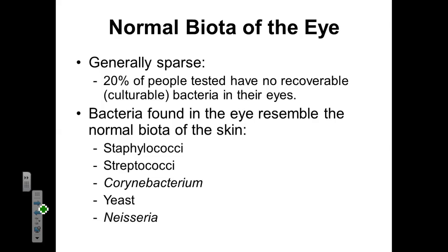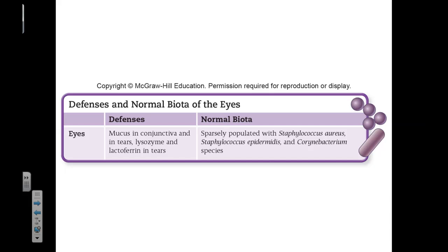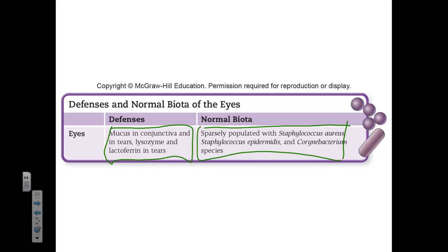Let's move on and talk about the normal biota of the eye. Our eye, generally speaking, doesn't have a lot of microorganisms growing on it. In 20% of people tested in a recent study, approximately no microorganisms were found — no culturable bacteria were found in their eyes. The bacteria that are found on the eye generally resemble the biota of the skin. We'll find staphylococci, streptococci, corynebacteria, yeast, and Neisseria. Our eye has a variety of defenses from mucus to tears to lysozymes, and the microorganisms present are similar to those on the skin but at much lower numbers.